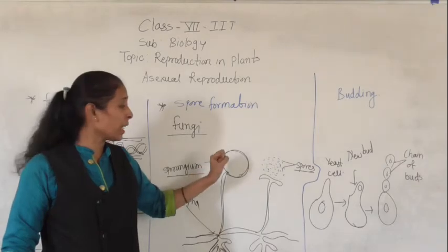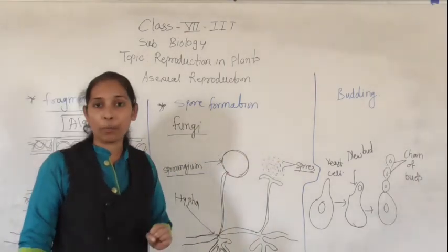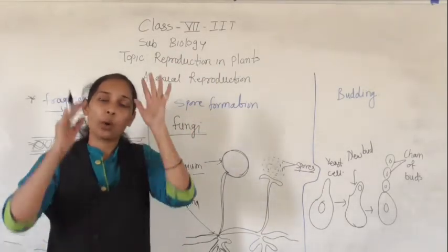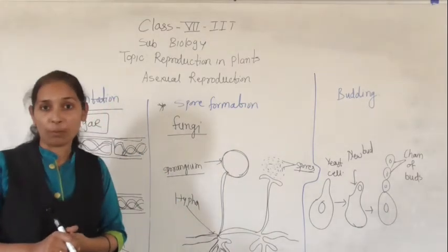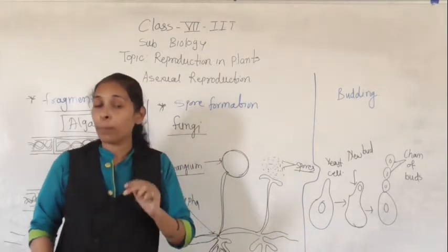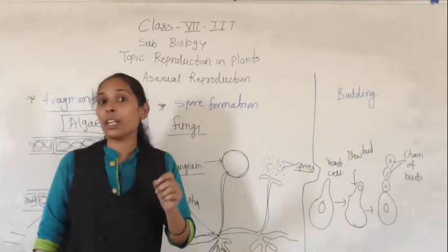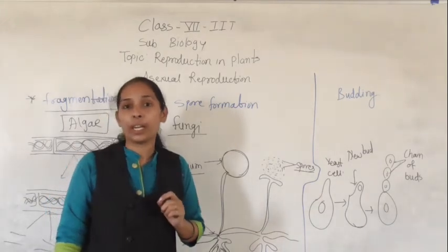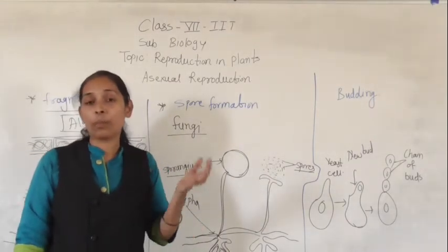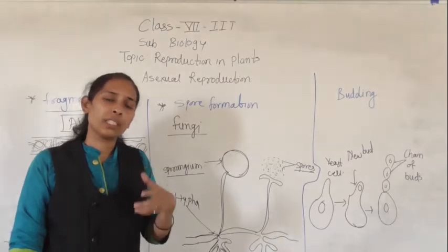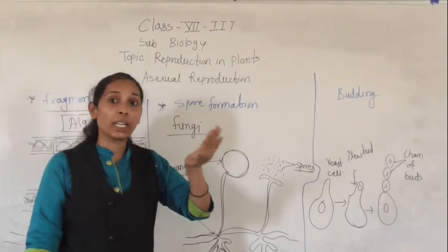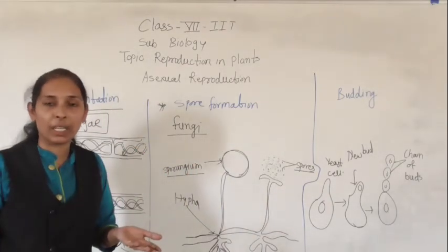Once the sporangium matures, it bursts and all the spores come out and spread in the air. So we can say that spores of fungi are already present in the atmosphere. These spores have a very hard protective layer to protect them from adverse climatic conditions — for example, extremely hot or extremely cold conditions. Each spore has a protective layer which protects it from adverse climatic conditions.